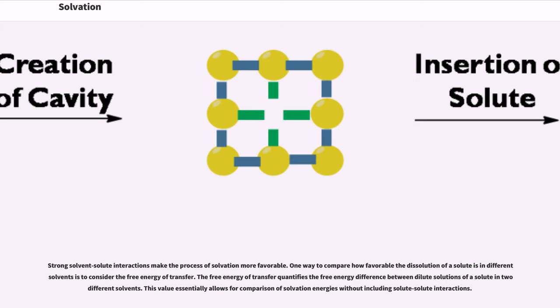Strong solvent-solute interactions make the process of solvation more favorable. One way to compare how favorable the dissolution of a solute is in different solvents is to consider the free energy of transfer. The free energy of transfer quantifies the free energy difference between dilute solutions of a solute in two different solvents. This value essentially allows for comparison of solvation energies without including solute-solute interactions.